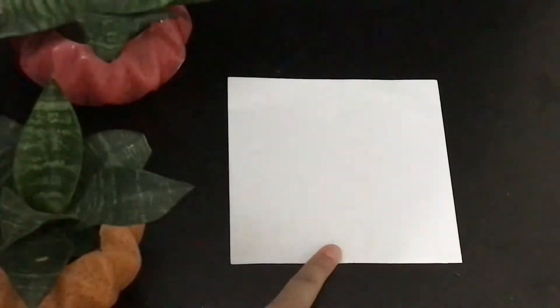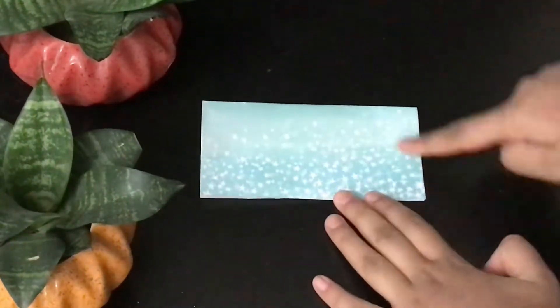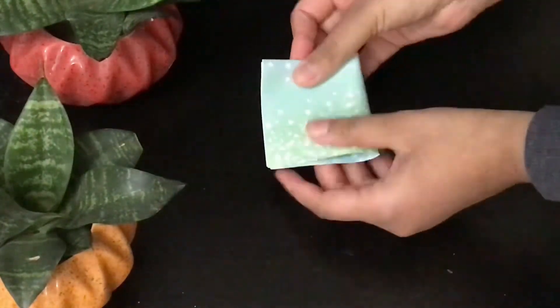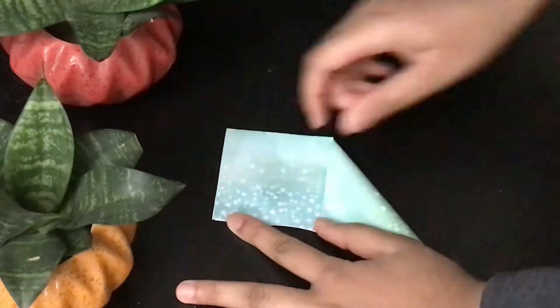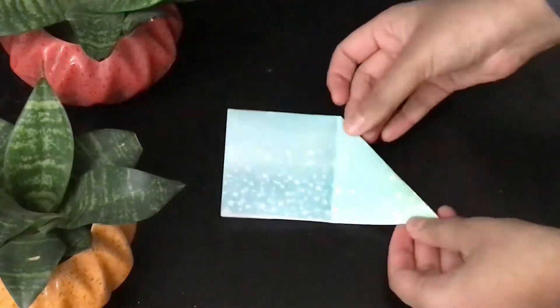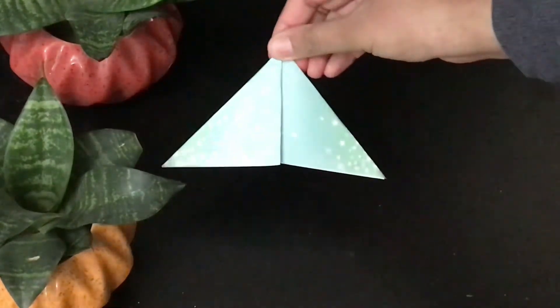For this third DIY, take an origami sheet, bring the top part towards the bottom. Then, bring the first side towards the second one. After that, bring this corner towards the bottom one. Do the same with the second one as well. This will form a triangle.